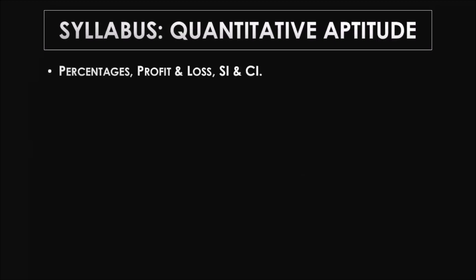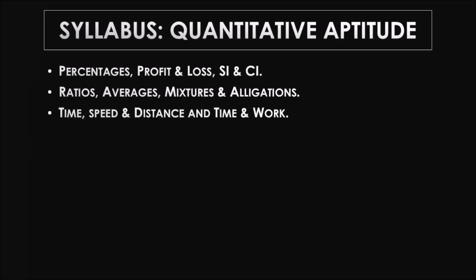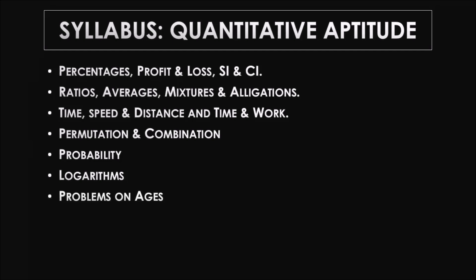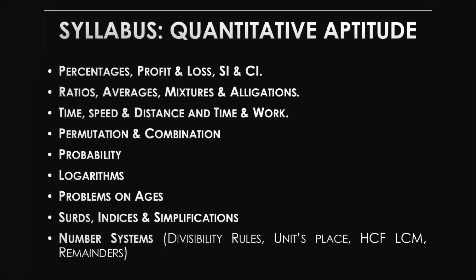Now let's talk about quantitative aptitude. One of the most important topics is percentages, profit and loss, simple interest, compound interest — the entire percentage family. Then we have ratios, averages, mixtures and allegations, time-speed-distance — which includes problems on trains and boats and streams — and time and work, which includes pipes and cisterns and efficiencies. We also have permutation and combination, probability, logarithms, problems on ages, surds and indices, simplifications, and number systems, which includes divisibility rules, units place with power cycles, HCF, LCM, and remainders.